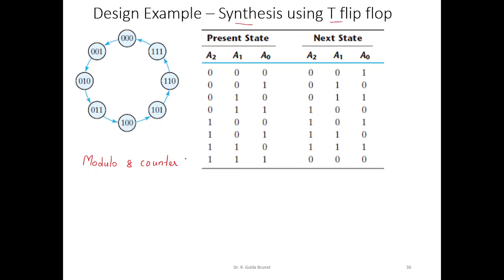The word description of the problem is to design a modulo 8 counter. What is a modulo 8 counter? When we divide a number by 8, the possible remainders are from 0 to 7. And since this is a counter, we want to count from 0 to 7 and then go back to 0.